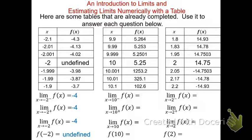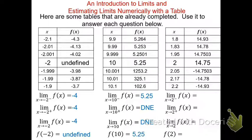For the next example, the limit of f(x) as x approaches 10. From the left, it goes from 5.264 to 5.253 to 5.2501 — approaching 5.25. From the right, it goes from 102 to 325-something to 1,000-something — unbounded. Because the right side is not approaching a unique number, the right-side limit does not exist, and therefore the overall limit does not exist, even though f(10) = 5.25.